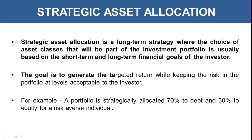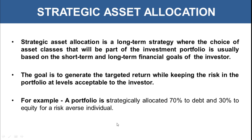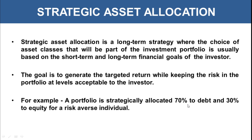The goal is to generate the targeted return while keeping the risk in the portfolio at a level acceptable to the investor. For example, a portfolio is strategically allocated 70% to debt and 30% to equity for a risk-averse individual. For a conservative or risk-averse individual, by analyzing his risk-bearing capacity, 70% is allocated to safer debt instruments and 30% to riskier equity. According to that individual's goal and risk-taking capacity, the portfolio is built up.